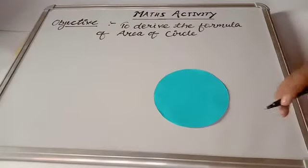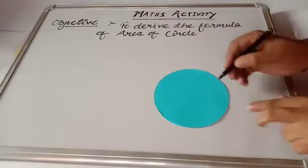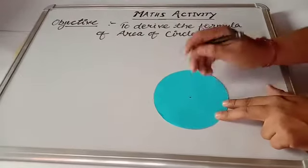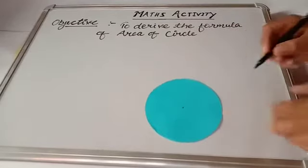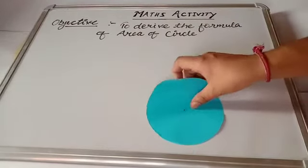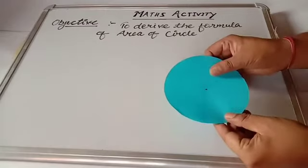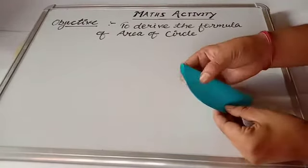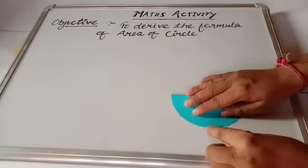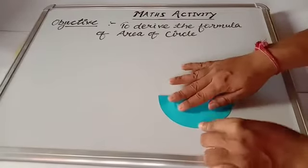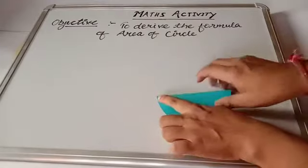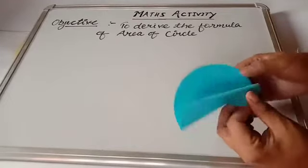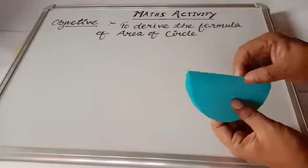First, we will mark the center of the circle with the help of a marker. I have already marked the circle. Now, fold the circle into a semicircle. I am folding the circle so that it becomes a semicircle.